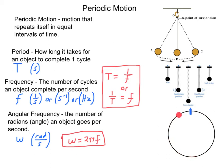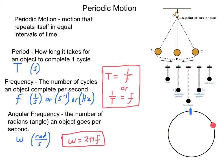Now, the relationship between these two should be somewhat obvious to you. Notice: period is how long time it takes for one cycle; frequency is number of cycles per one second. Both involve time and a cycle — they're just reversed of each other. That leads us to this equation: period is the same as one divided by the frequency, or the inverse of the frequency, and one over the period is the frequency.